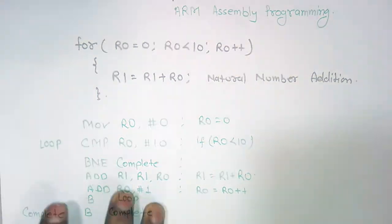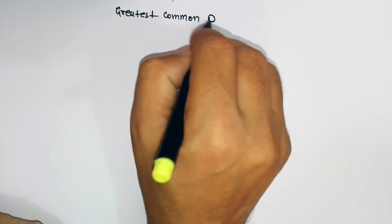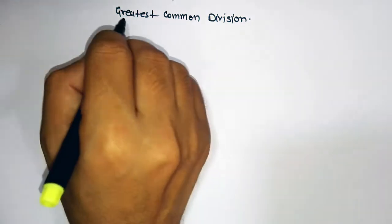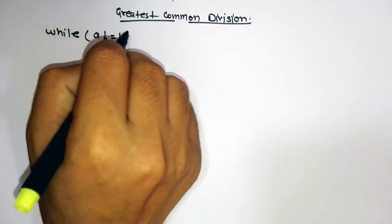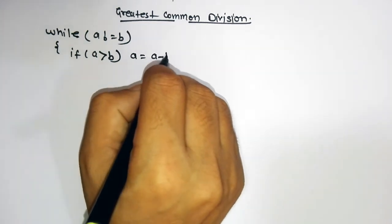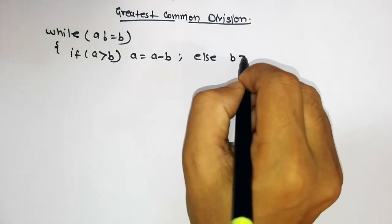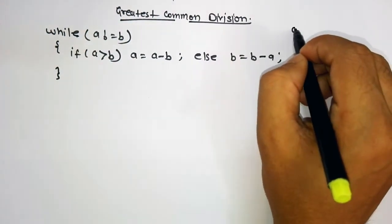Now let's take another simple example: GCD, the greatest common division. First, write it in C. A simple C program can be written as: while a is not equal to b — if a is greater than b, then a equals a minus b, otherwise b equals b minus a. So it is a simple GCD program.